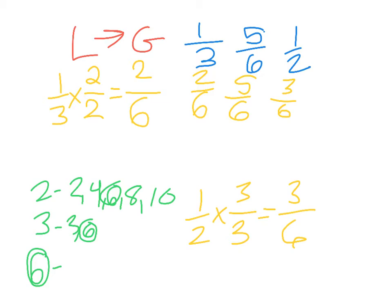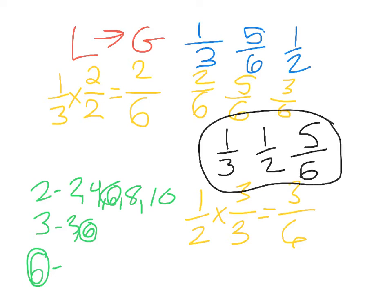Then finally, all that's left to do is put my fractions in order. Well, I see my two-sixths is the smallest, so that's actually my one-third. And then three-sixths is next, so that's my one-half. And finally, my five-sixths. So, that was a way to use like denominators to do my comparing.